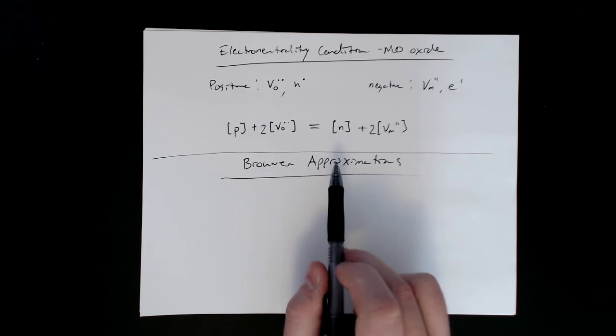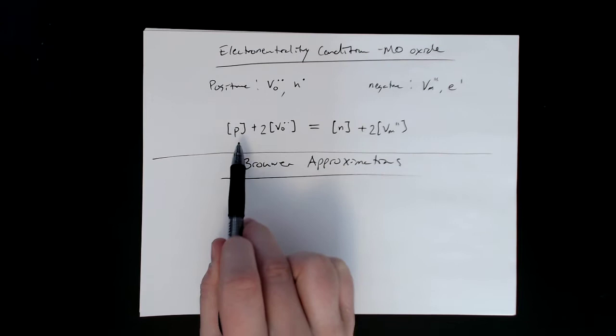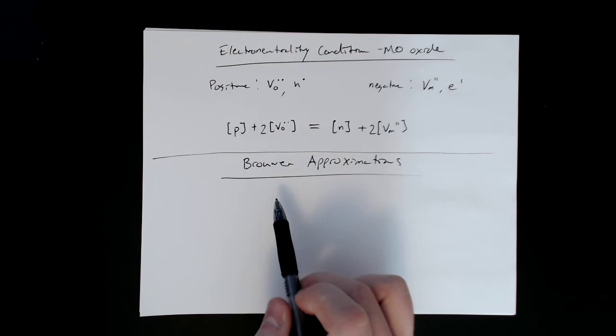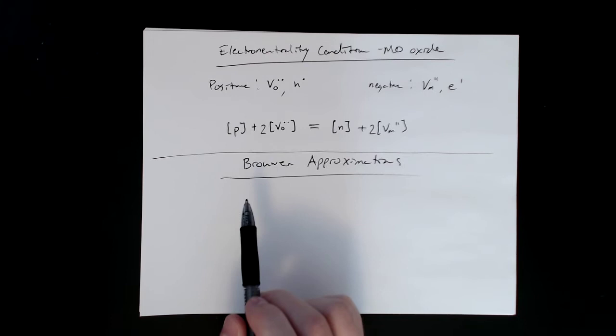It allows us to kind of ignore the others. So let's say that electrons and electron holes are our majority defect. It basically says that the others are so low that we can just assume that there's zero, and that would allow us to simplify the electroneutrality condition.